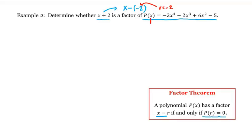So we'll plug in negative 2 everywhere we see an x here, and if we get 0 as an answer, then yes, x plus 2 will be a factor of p. So what is p of negative 2? This is equal to negative 2 times negative 2 to the 4th minus 2 times negative 2 cubed plus 6 times negative 2 squared minus 5.